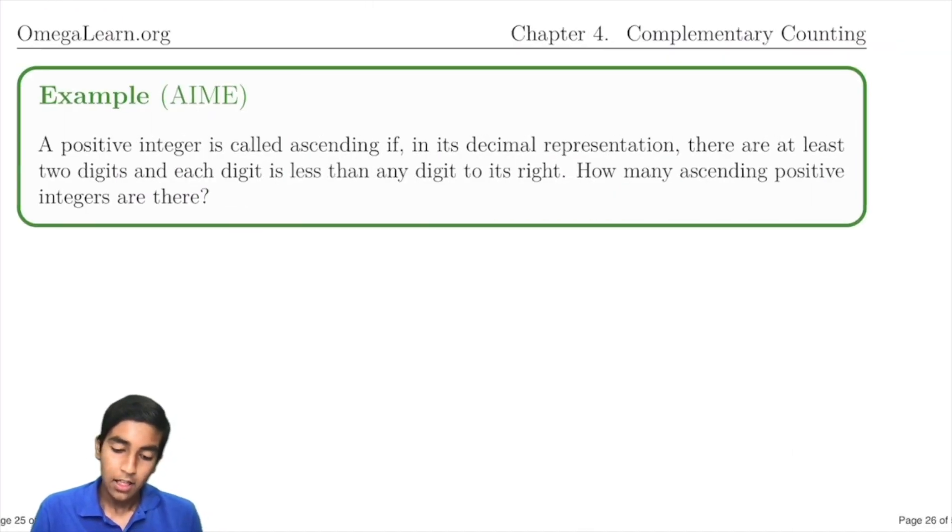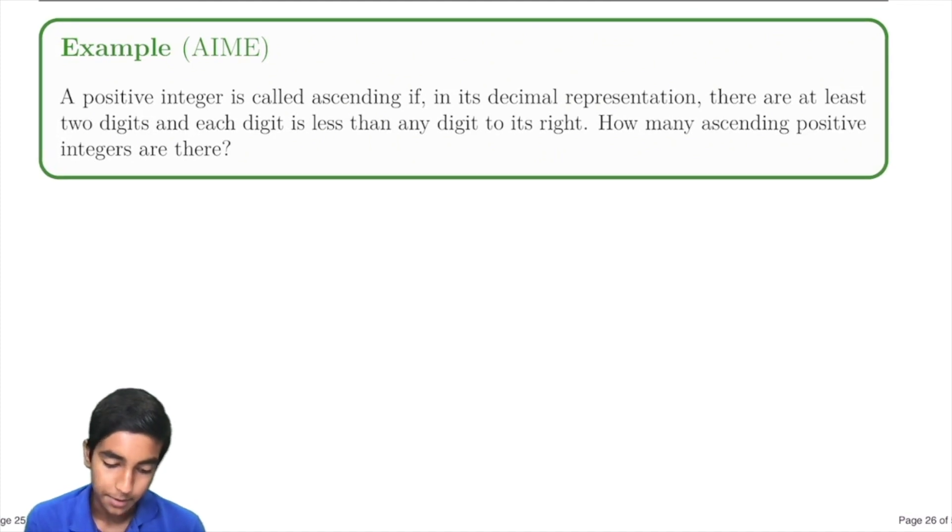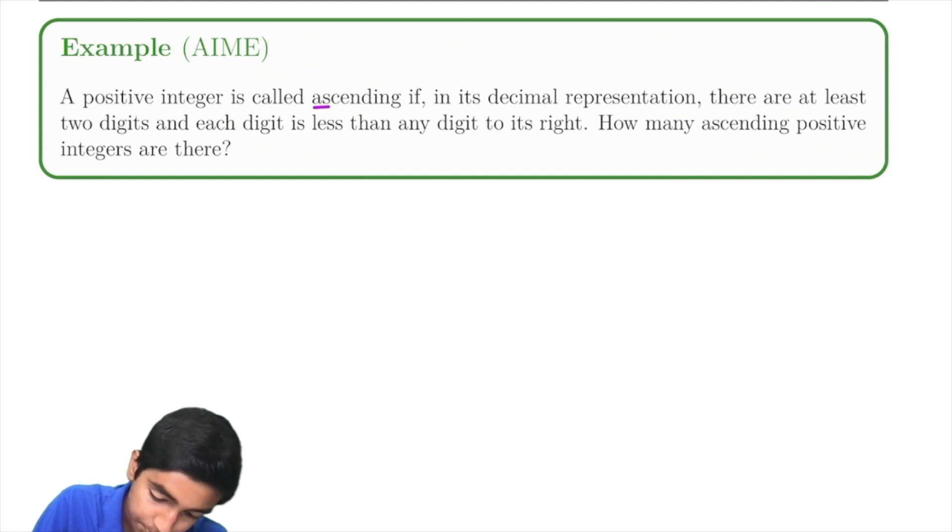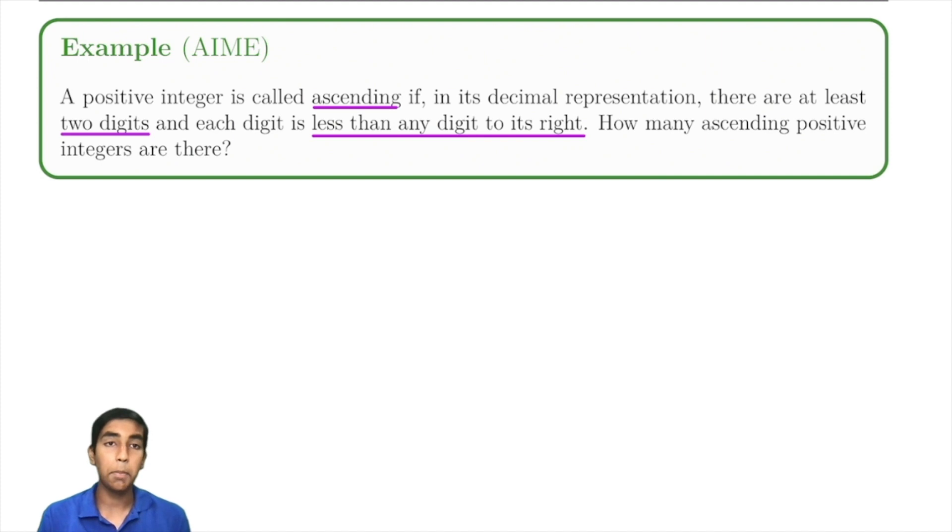Let's take a look at this problem over here. A positive integer is called ascending if in decimal representation, there are at least two digits, and each digit is less than any digit to the right. What is the maximum number of digits that are possible?